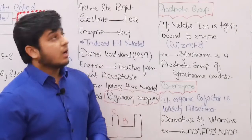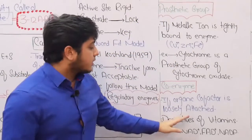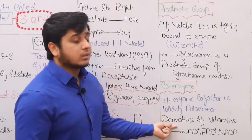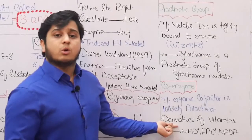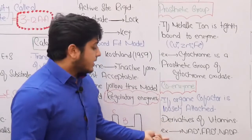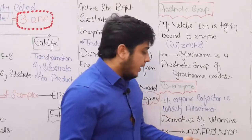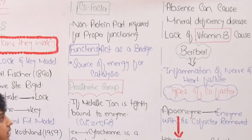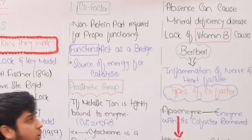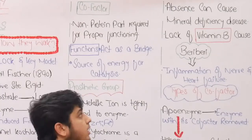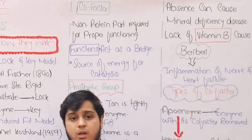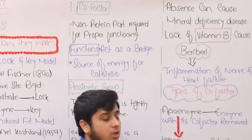If the cofactor is loosely attached to the enzyme, it is known as a coenzyme. Coenzymes are typically derivatives of vitamins. Examples include NAD, FAD, and NADP molecules. If any vitamin or mineral is deficient in the body, it will cause a specific disease. For example, deficiency of vitamin B causes the disease known as beriberi, which is basically inflammation of the nerves and heart failure.